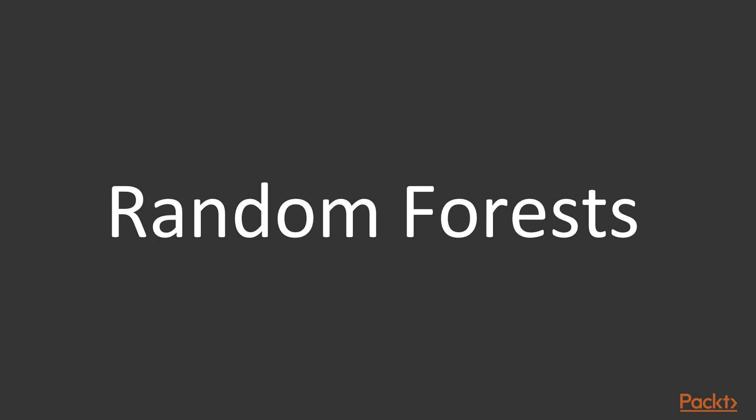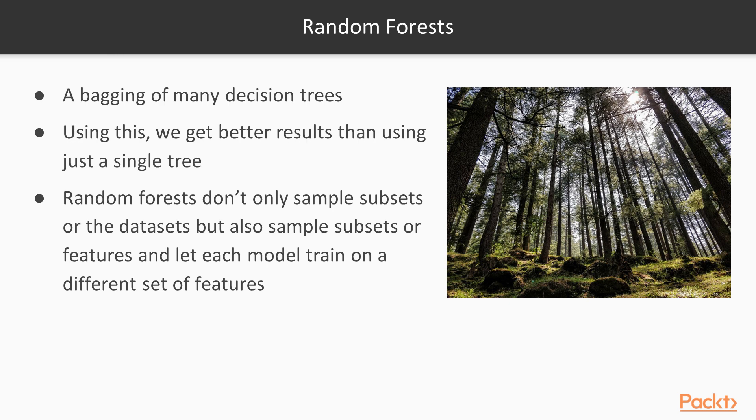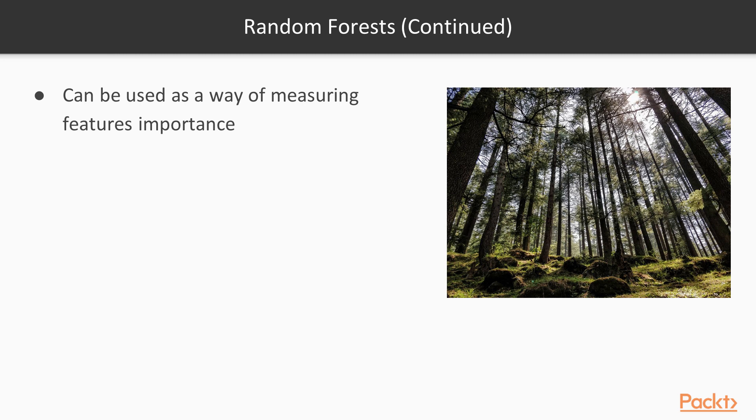So the previous discussion should have laid down the ground and made your brain ready to absorb random forests in an eye blink. Random forests, as the name suggests, are a bagging of many decision trees. This way we get better results than using just a single tree. However, it has one more distinct characteristic over bagging. Random forests don't only sample subsets of the data set, but also sample subsets of the features and let each model train on a different set of features. As a consequence, we can use random forests as a way of measuring feature importance.